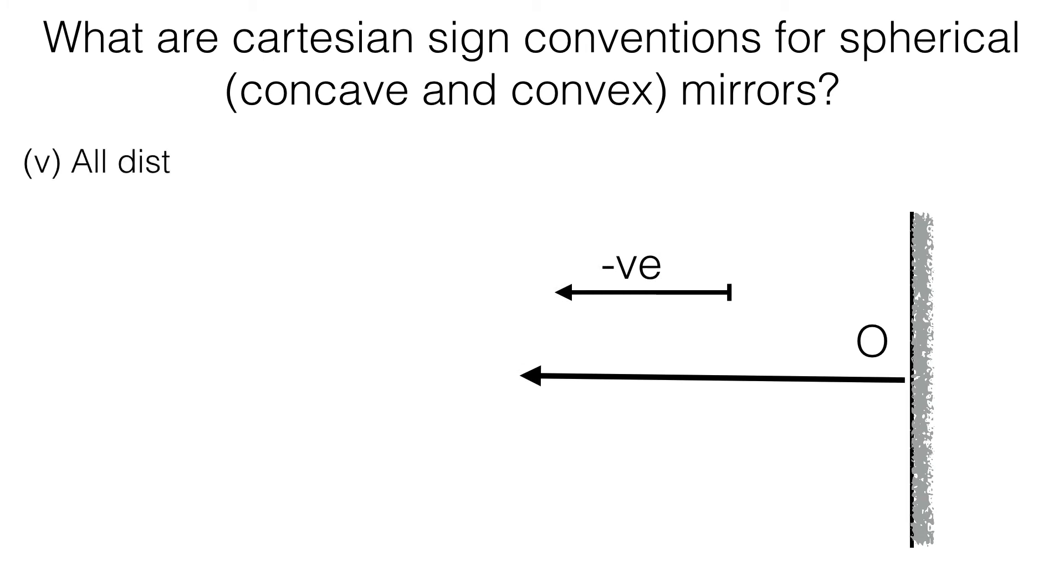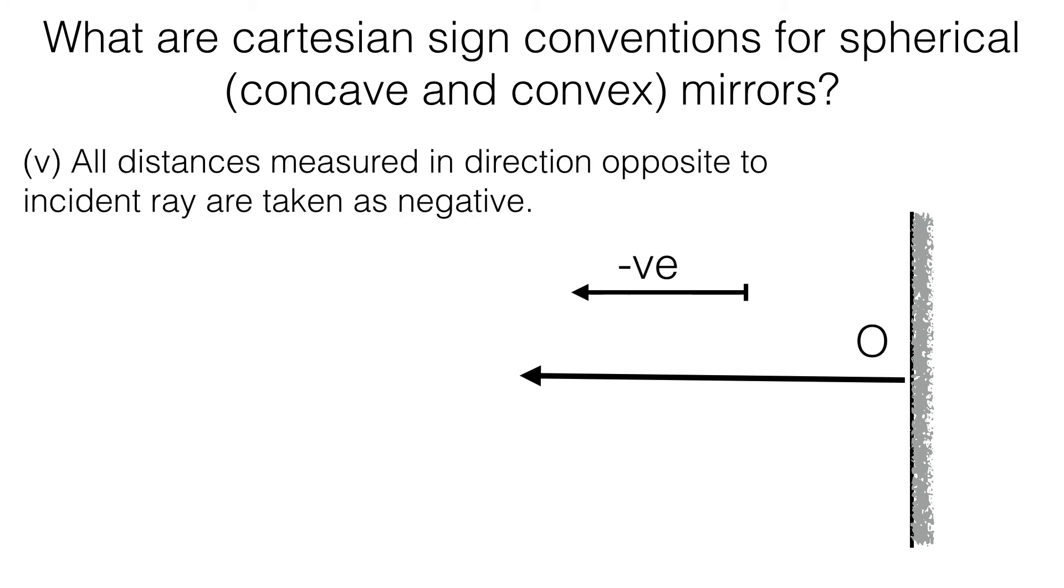All distances measured in direction opposite to the incident ray are taken as negative.